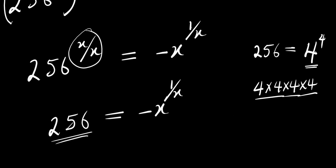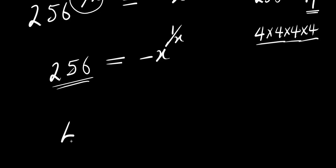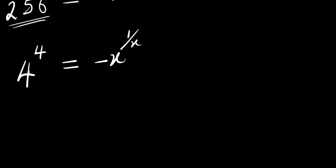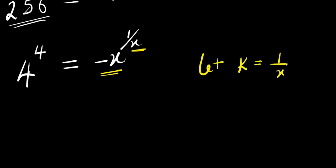We are going to replace this with 4 power 4. So we have 4 power 4 equals negative x power 1 over x. Here comes the magic — we need to ensure that this and this are the same. I can say: let k equals 1 over x, so this 1 over x I'm going to replace with k. So we have 4 power 4 equals negative x power k.